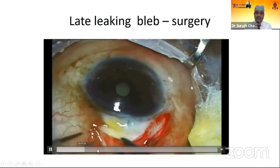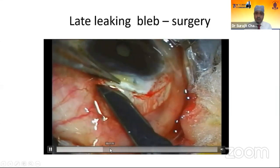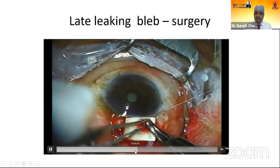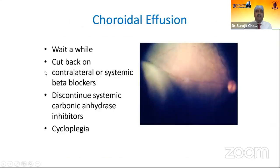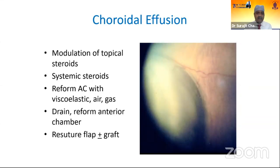For a late leaking bleb, there is no role of the above options — we go straight to bleb revision. We excise the whole area and cover it with a scleral patch and close it. Choroidal effusion is another important entity, mostly associated with hypotony. We need to wait for most choroidal effusions — particularly in early hypotony, they resolve on their own. Cut back on topical or systemic beta-blockers, discontinue systemic carbonic anhydrase inhibitors and cycloplegics. Modulation of topical and systemic steroids, reforming the anterior chamber with viscoelastic, or resuturing the flap may be another option.